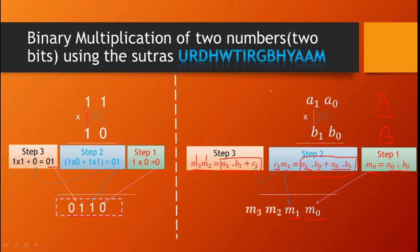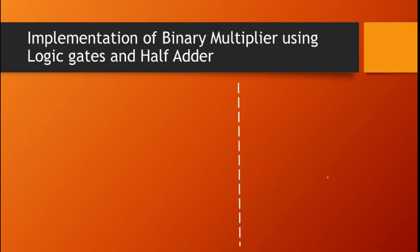In this way we use a generalized approach where A1, A0, B1, B0 can be 00, 01, 10, or 11 — they are variables that can take any value of 0 or 1. So how can we implement this Vedic multiplier based on the Urdhva Tiryakbham sutra using logic gates and half adders?